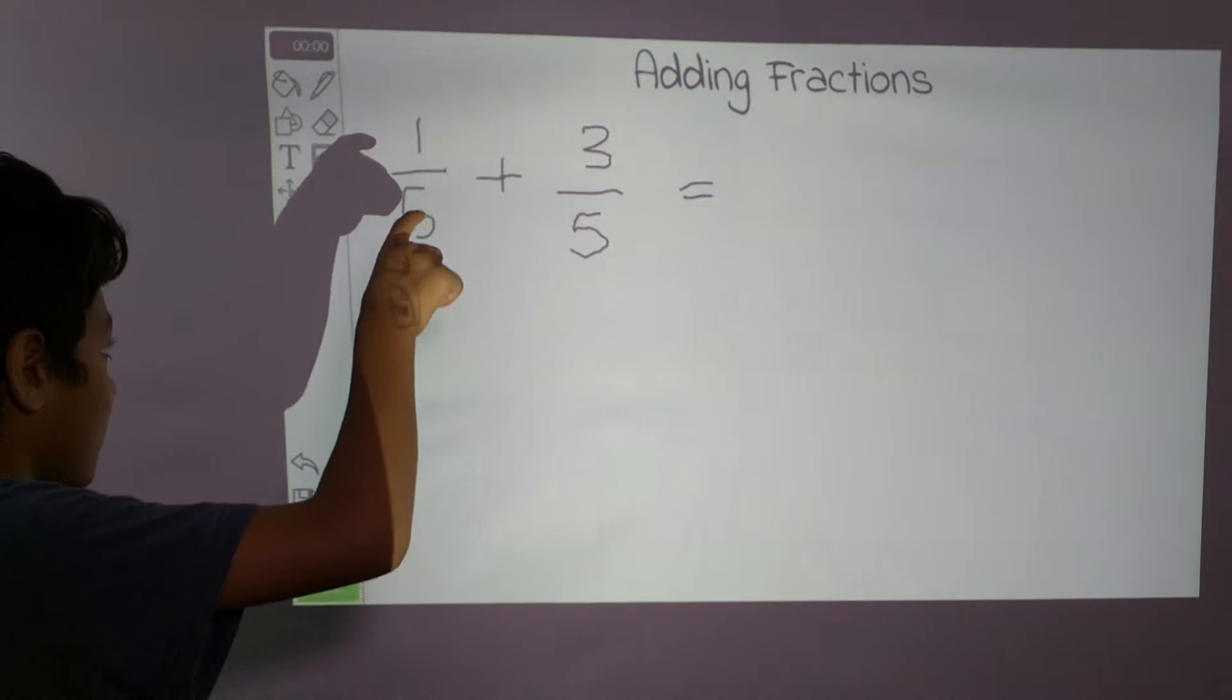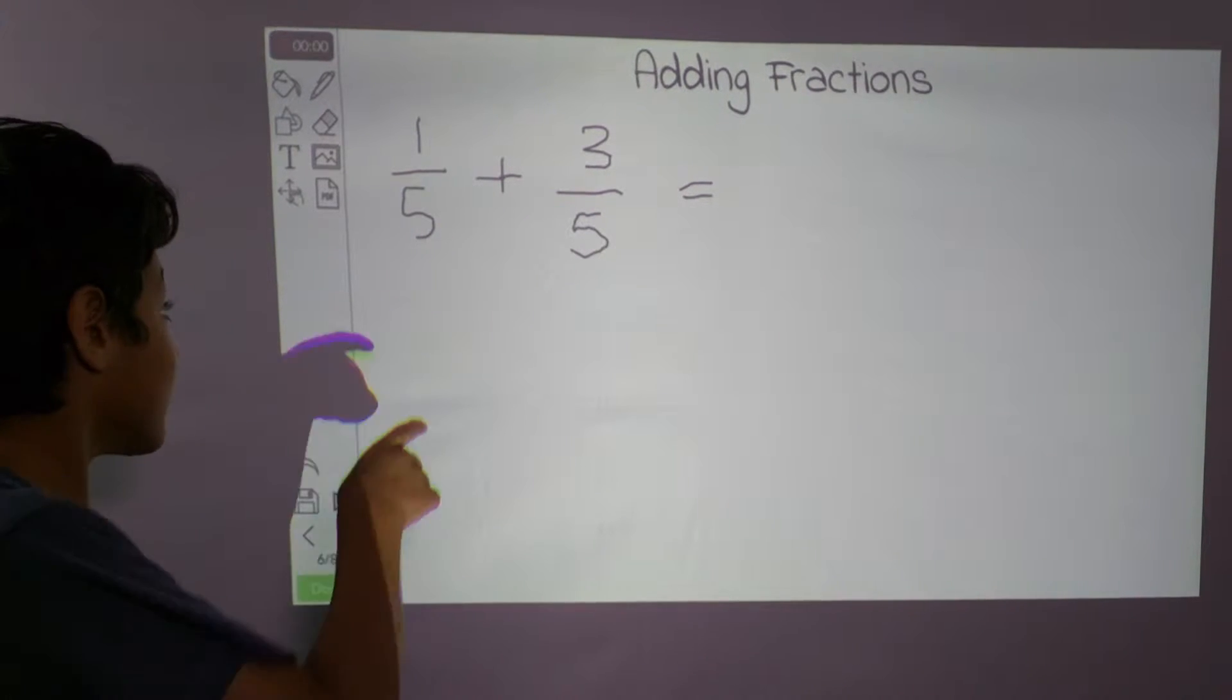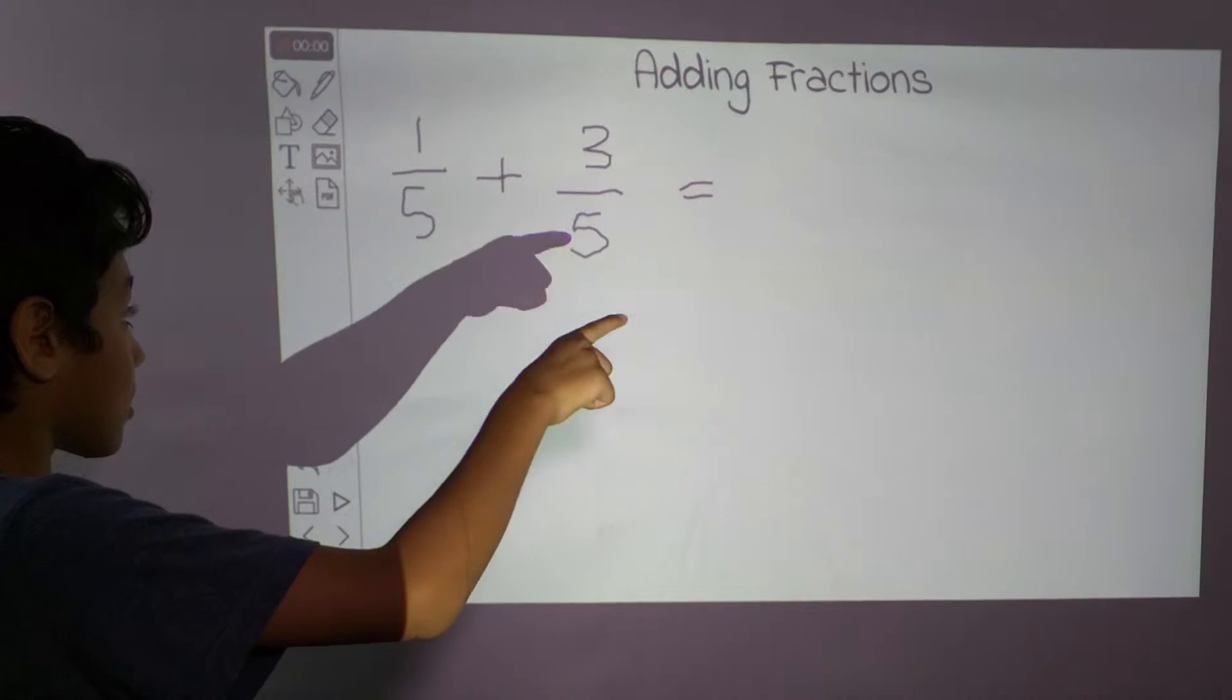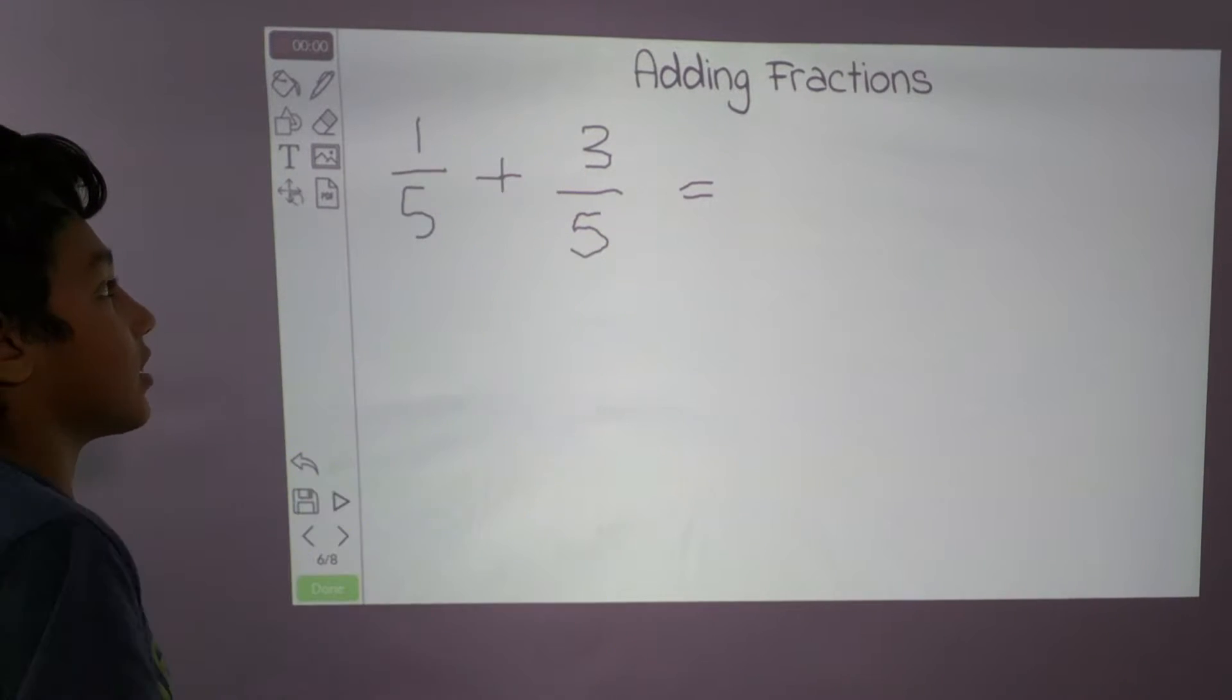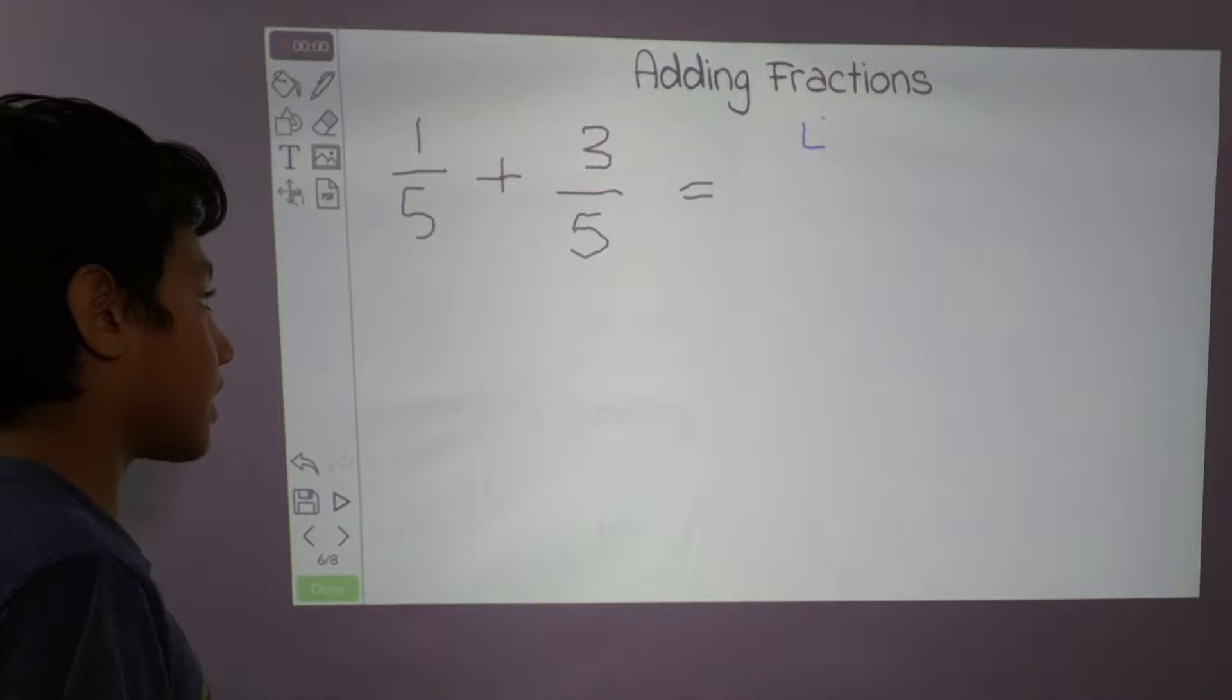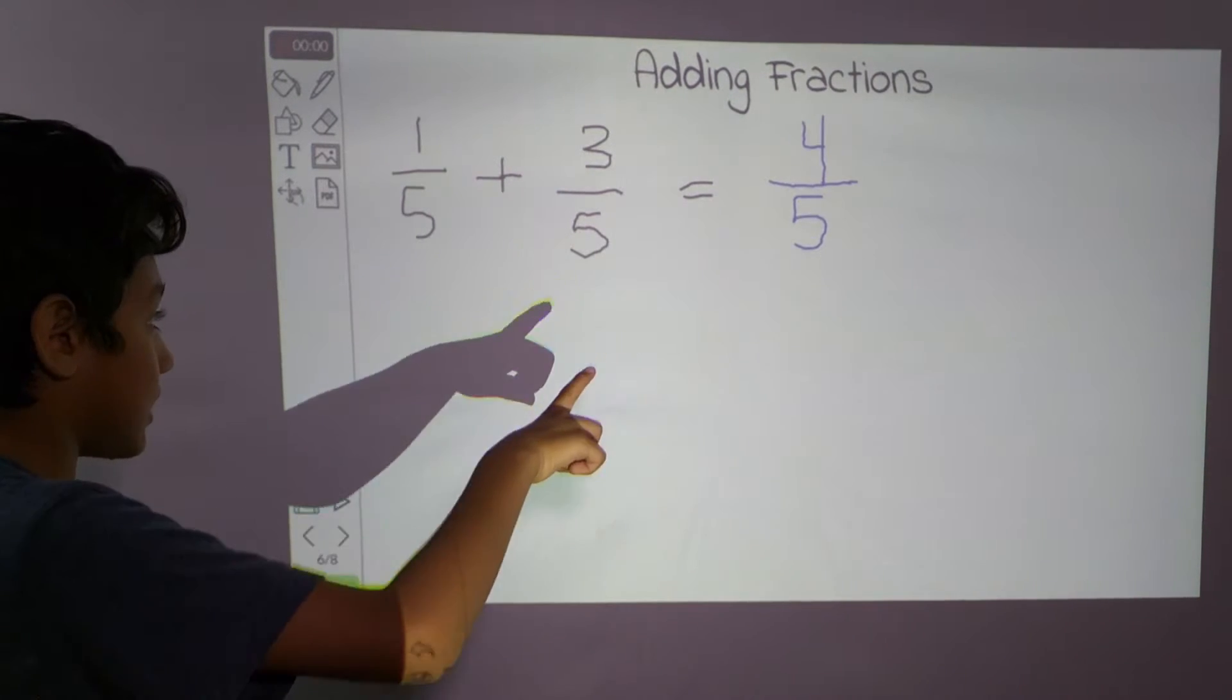Our first problem is 1 over 5 plus 3 over 5. So the key to adding fractions is to make the denominators the same. The denominators are already the same, so we don't have to do anything but add the numerators. So 1 plus 3 is 4. So we get 4 over 5. The denominator stays the same.